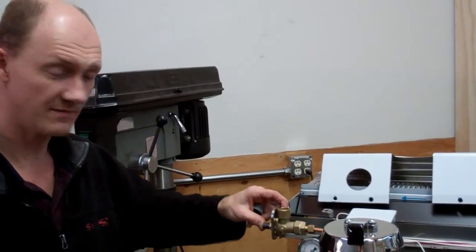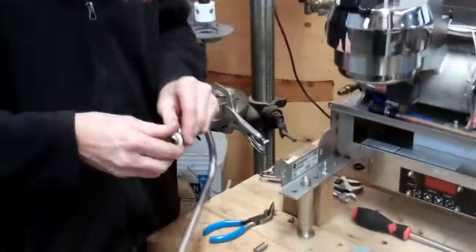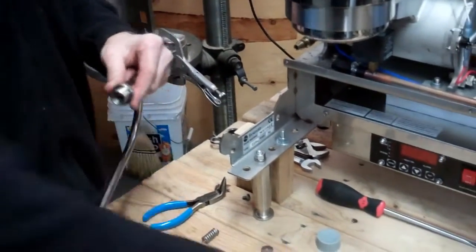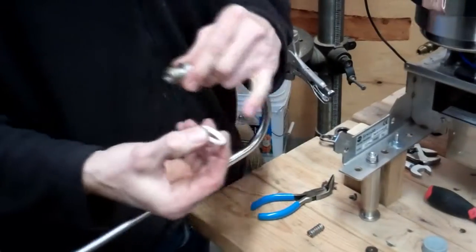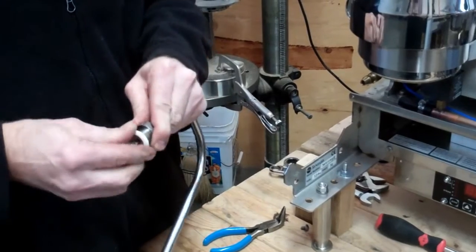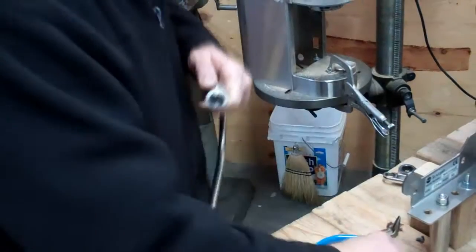To put the steam wand back on, put the new gasket on. Again, there's a smooth side and a sharp side. Smooth side first makes this a much easier process. The spring goes back in the top.